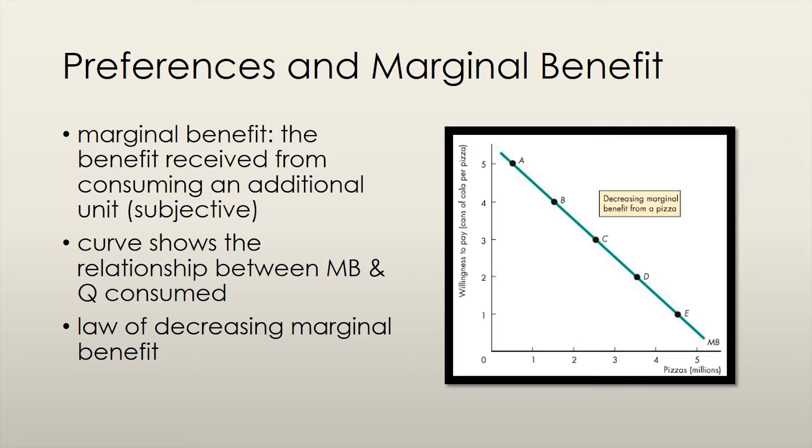Marginal benefit is measured by the maximum amount of money that someone is willing to pay for an additional unit of a good.